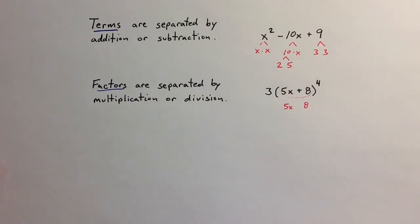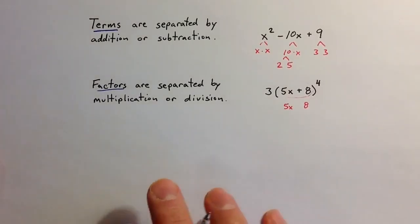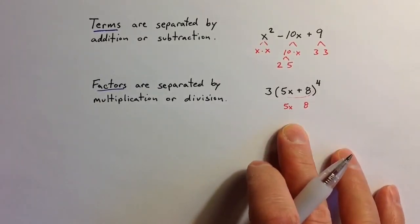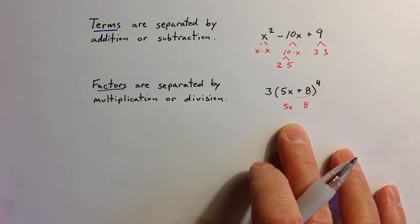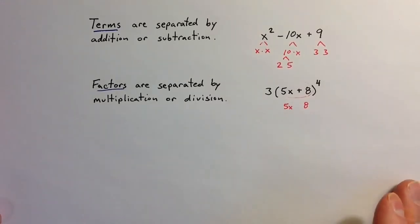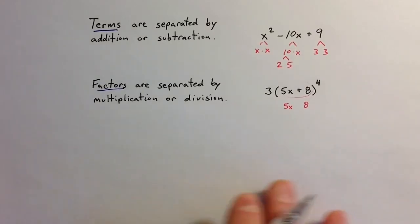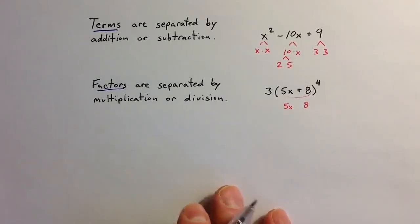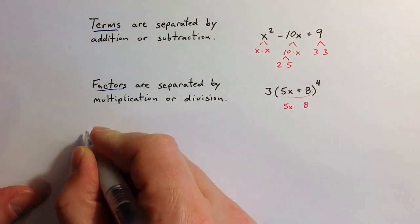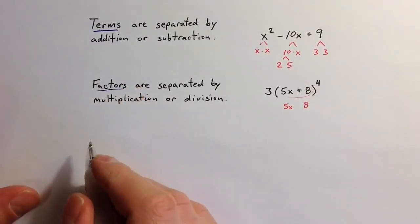If something is separated from something else by addition or subtraction, we can think of those two things as terms. And if things are separated by multiplication or division, we can think of those aspects as factors. Understanding algebraic operations requires understanding how terms and factors interact, and what they mean: factors are related to multiplication, terms are related to addition.